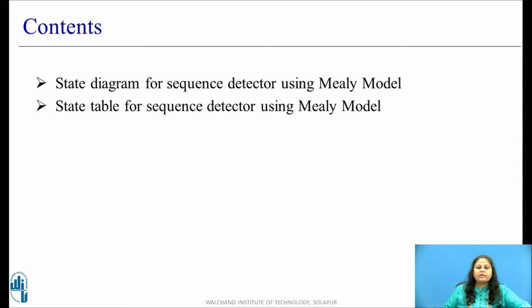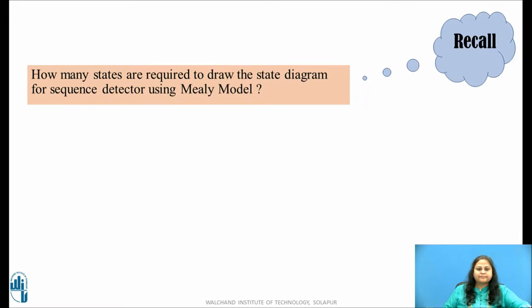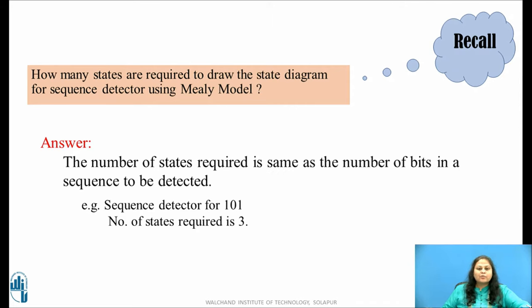These are the contents we will be covering in this session. Before moving ahead, recall how many states are required to draw the state diagram for a sequence detector using a Mealy model. The number of states required is the same as the number of bits in the sequence to be detected. For example, consider a sequence detector to detect the sequence 101 — the number of bits is 3, so the number of states required is 3.